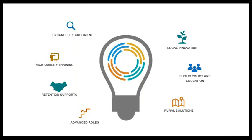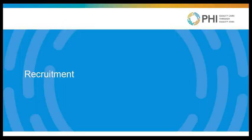Some of the ideas we're working to implement include collaborating with each organization to learn their existing recruitment and retention strategies, building on what works well, and addressing opportunities for improvement. This includes enhanced recruitment strategies, implementing high-quality training that does a better job preparing workers for the realities of caregiving, a range of retention supports, and creating advanced roles so home care workers have an opportunity to grow their knowledge, skills, responsibilities, and wages. We'll also be looking at local innovations and weaving in public policy recommendations and increasing public awareness with an emphasis on rural solutions.